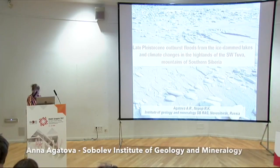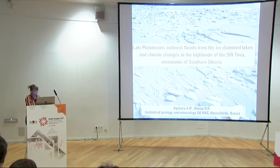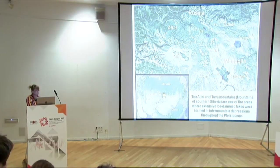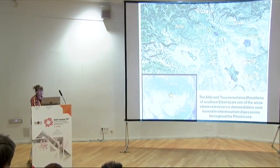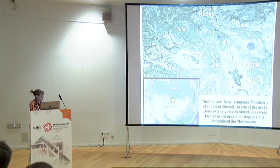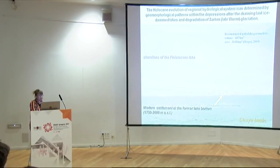Good afternoon, dear colleagues. I am glad to see you here in Zaragoza. Now let's move to Central Asia, to the Tuva region. Today this territory is characterized by ultra-continental climate — annual precipitation is not more than 200 millimeters. Nevertheless, the Altai and Tuva mountains are one of the areas on earth where extensive ice-dammed lakes are formed in mountain depressions, and repeated draining of these lakes caused significant landscape changes downstream. The Holocene evolution of the regional hydrological system was determined by geomorphological patterns with depression after the draining of ice-dammed lakes and degradation of the surface.